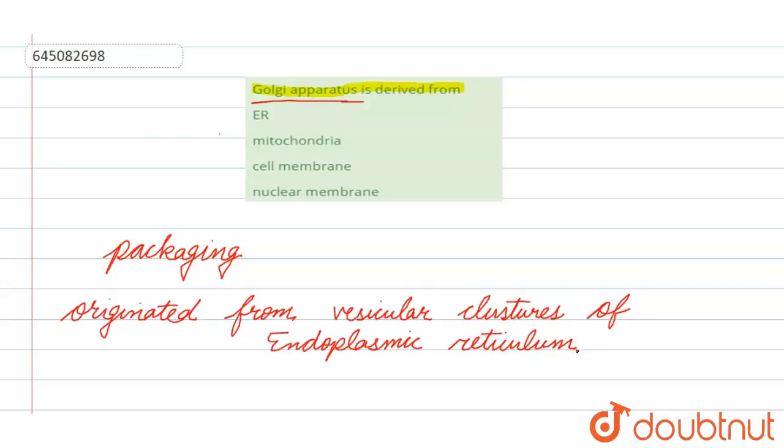Okay, so the correct answer of this question will be option number one, endoplasmic reticulum. Mitochondria, cell membrane, and nuclear membrane—all these three will be wrong. So option one is the correct answer. Hope you understood the solution. Thank you.